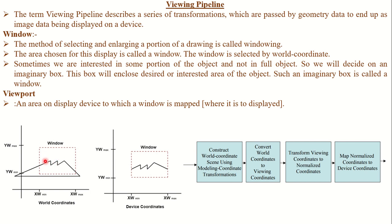With the help of this window we choose a particular scene from the real world. A viewport is an area on a display device to which a window is mapped — where it is to be displayed. If you are displaying the image on your phone, the phone screen is the viewport; the TV size is a viewport; the projector size is a viewport. So the process of capturing an image from the real world and displaying it on a 2D system — because our TVs and mobiles are 2D systems — is called viewing pipelining.